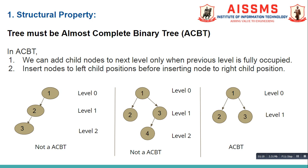Let us see the examples. In this first figure, root node 1 can have a maximum of two child nodes as per the rule of binary tree. So level 1 should have two nodes, but instead of adding node 3 at the right child position of level 1, it has been added at level 2. So the first rule of ACBT is violated, therefore this is not a heap tree.